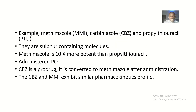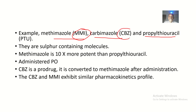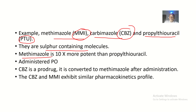Examples of thioamides include methimazole, carbimazole, and propylthiouracil (PTU). They are often written in short forms, but we'll say them in full. These thioamides are first of all sulfur-containing molecules.